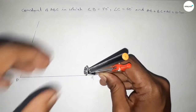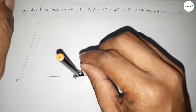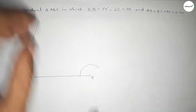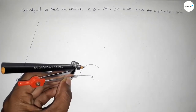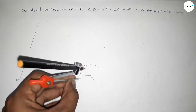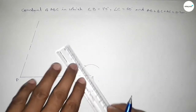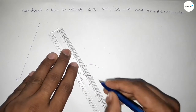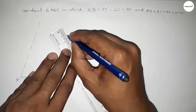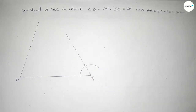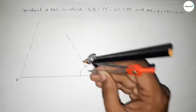Next we have to draw a 60 degree angle on the point Q. So putting the compass on the point Q and taking any length and drawing an arc by this way. With the same length and putting the compass here and cutting here, so both the curves intersect at a point. Now joining this line to get the 60 degree angle.